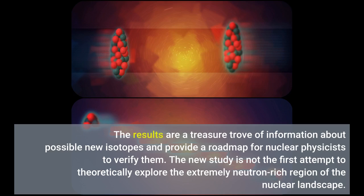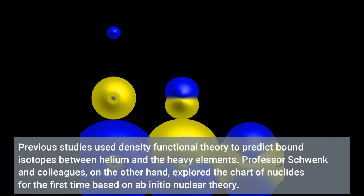The new study is not the first attempt to theoretically explore the extremely neutron-rich region of the nuclear landscape. Previous studies used density functional theory to predict bound isotopes between helium and the heavy elements. Professor Schwenk and colleagues, on the other hand, explored the chart of nuclides for the first time based on ab initio nuclear theory.